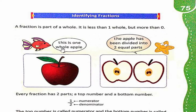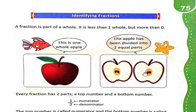This is one whole apple. Yeh ek pura apple hai. The apple has been divided into two equal parts. Agar hum apple ko beech mein se kaat dein, to yeh do equal parts ya barabar hisson mein taqseem ho jayega. Ab yeh donon jo hain, yeh is hole apple ke parts ya hissay hain.